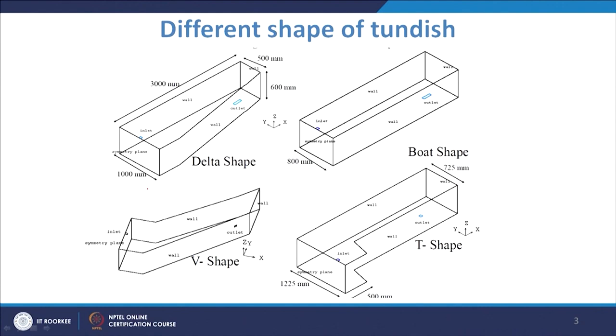Here we are going to discuss those aspects for different configurations of tundishes. There are different kinds of tundishes reported — different shapes — and we will look at how they perform, how you do the analysis, and how you can visualize the output results. We have taken four different types of tundishes, which are the outcome of research work I did for the ministry, DST.